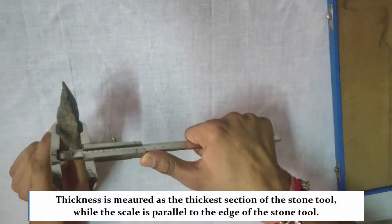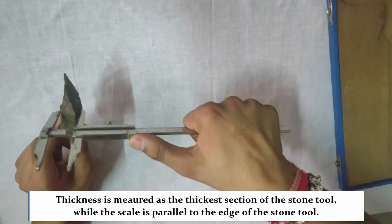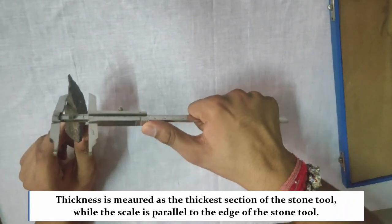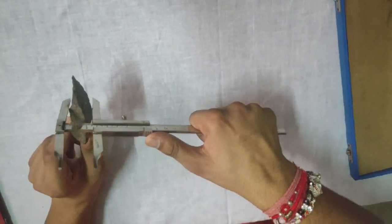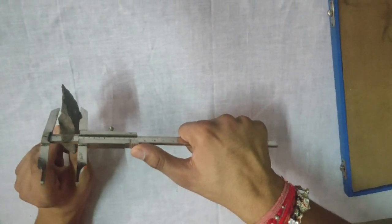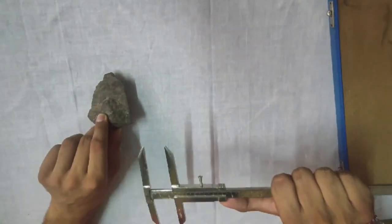The thickness of the stone tool is measured by keeping the scale perpendicular to the edge of the stone tool and the maximum value that the tool shows will be taken as the thickness of the stone tool.